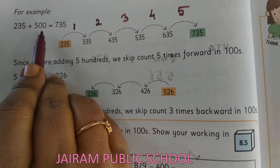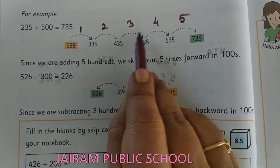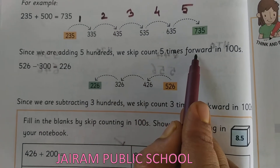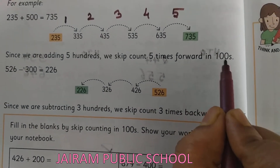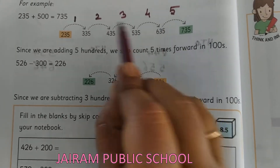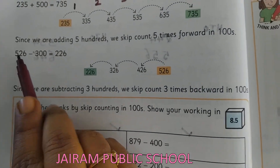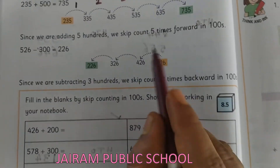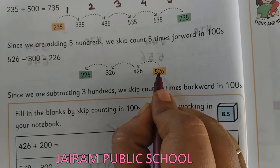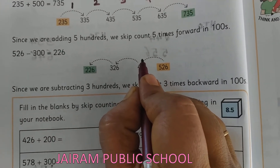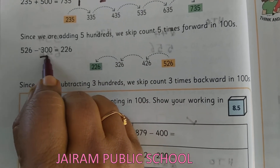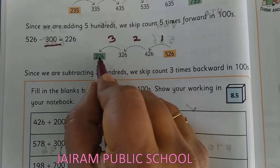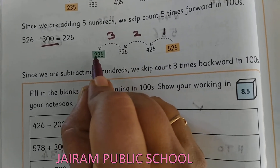So you have to skip count in hundreds. But see here how many hundreds they gave — 500 alone they gave. So you can skip count in 500s alone. Since we are adding 500, we skip count 5 times forward in hundreds. So skip count in hundreds, we are moving forward 5 times, and we will be getting the answer. In the same way, they have given 526 minus 300. Minus means you want to skip count backward. See they have given 526, so you want to move backward — skip count 100 only. But how many hundred? 300.